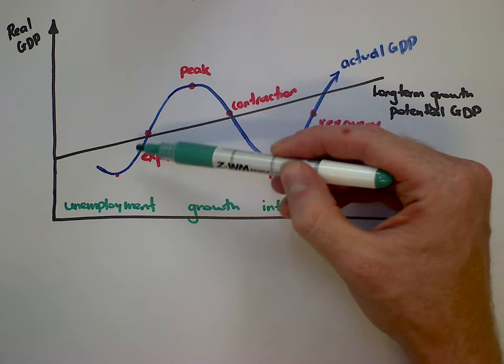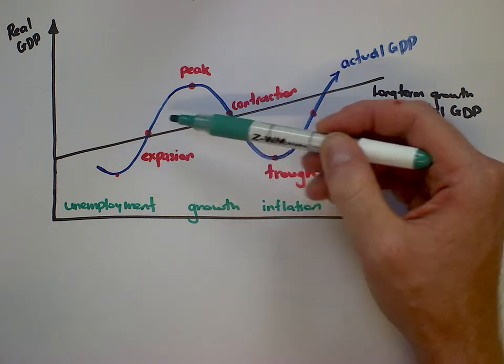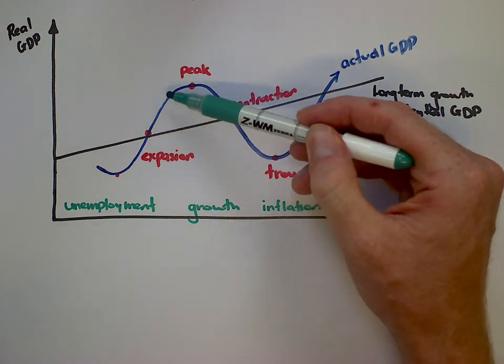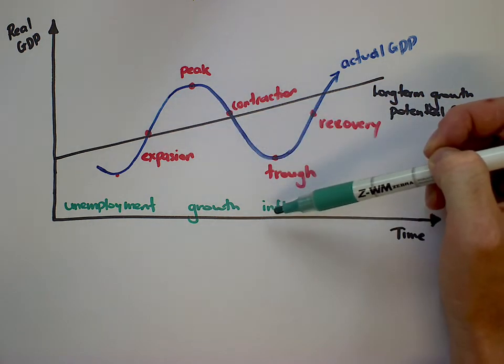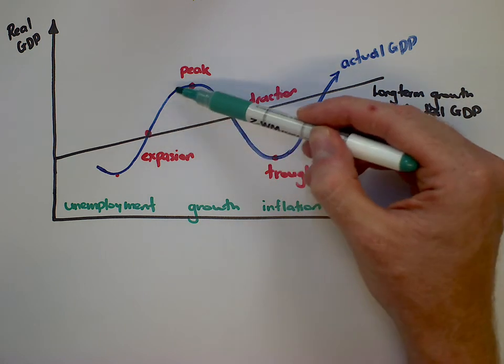So for instance, in a period of expansion we expect that the economy is growing and going upwards. When that's happening, unemployment is falling. As we climb up towards this peak, we tend to get a pressure on prices to do with the idea of scarcity. So this is inflationary pressure as we reach a peak.